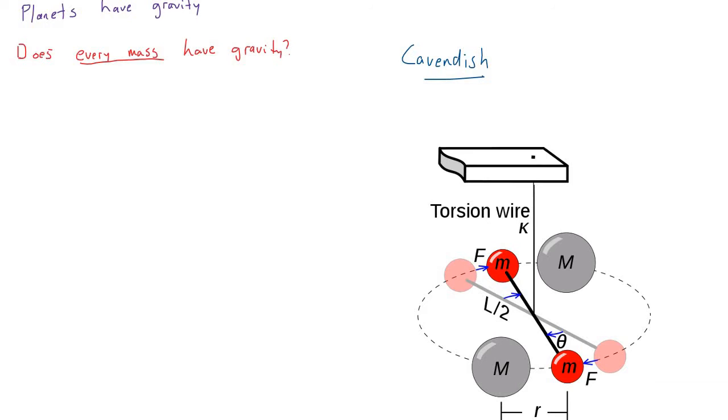And he sort of used this setup to prove that Newton was actually right when he said that there's this law of universal gravitation. So there's a force of gravity between every mass that is equal to G times M1 times M2 divided by R squared.